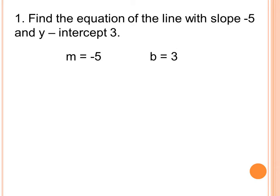To get the equation of a line given the slope and y-intercept, we are going to substitute the values of m and b in the slope-intercept form of the linear equation, which is y is equal to mx plus b. We will replace the value of m and the value of b.